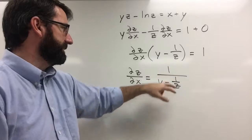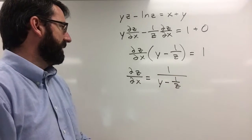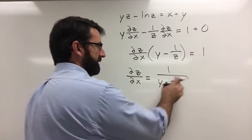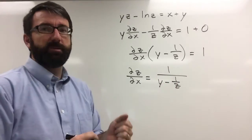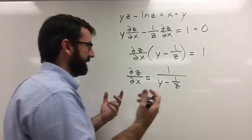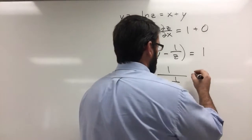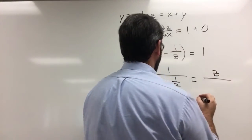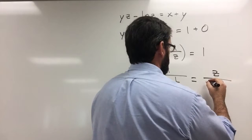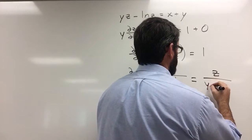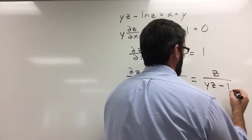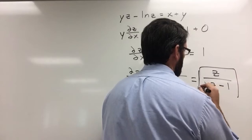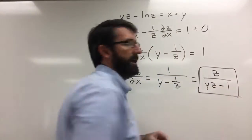Let's simplify this by multiplying top and bottom by z, so this is going to be equal to z over (yz minus 1), and that's going to be our answer.